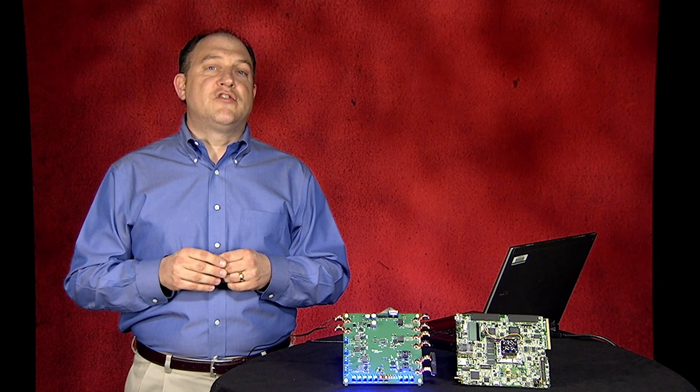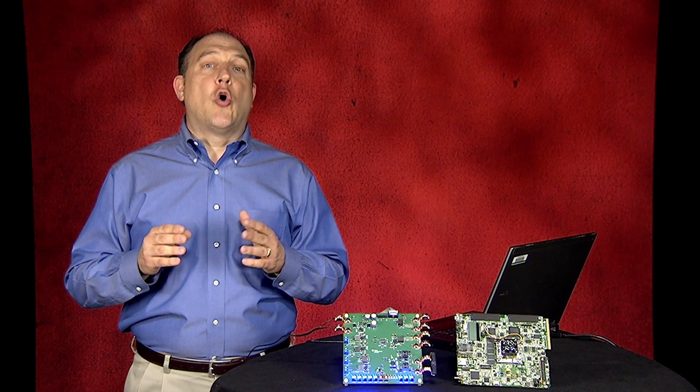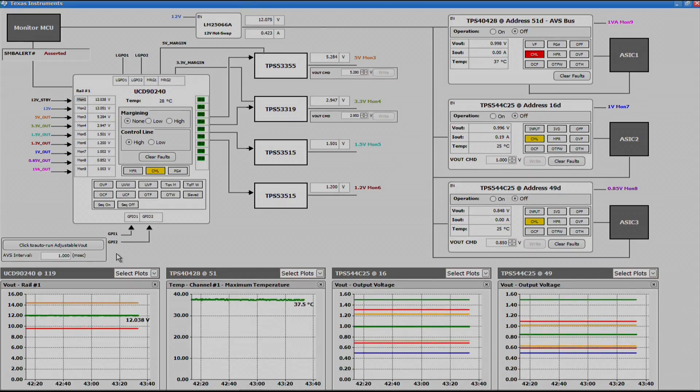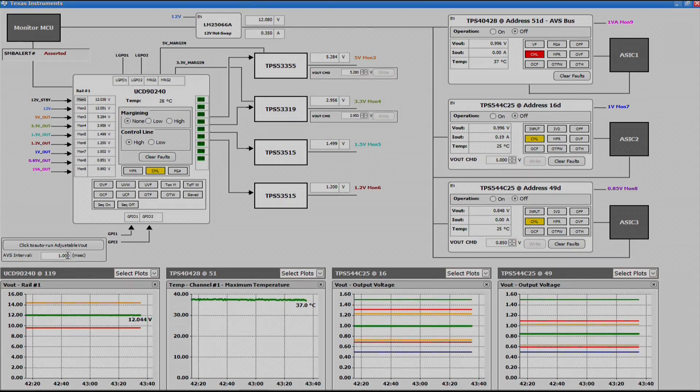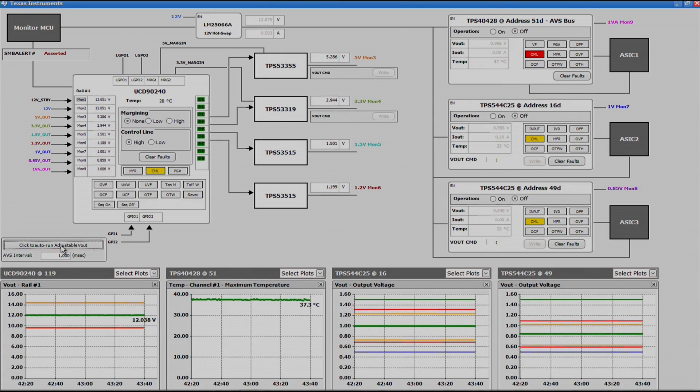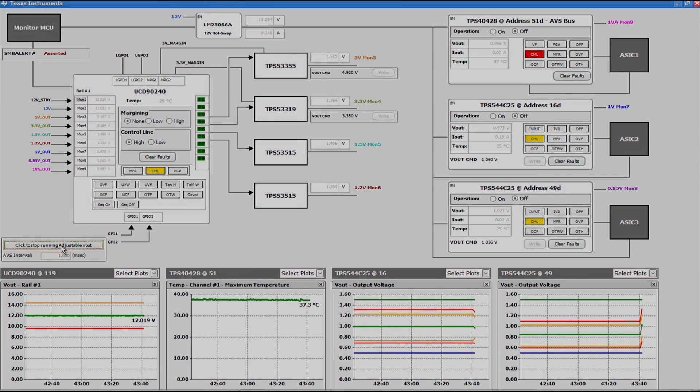Here we are using the Fusion Digital Power Designer GUI and a reference design to demonstrate the AVS feature. The demo is set to change the output voltage of the TPS544C25 every second with an auto-adjust routine, and the screen now displays the output voltage updates in real-time.